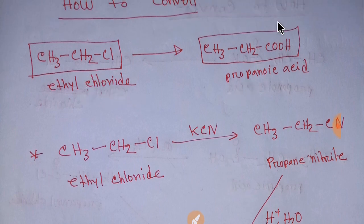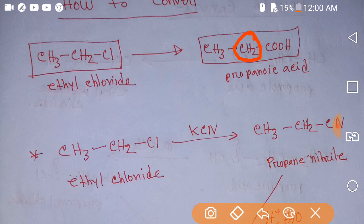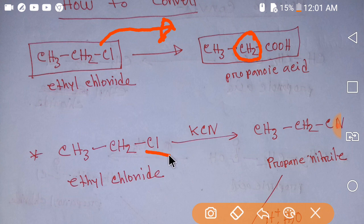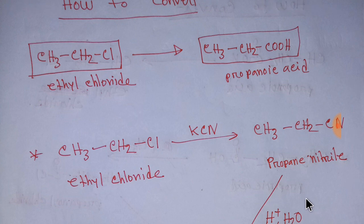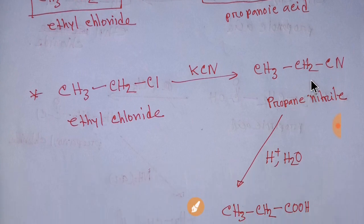If we want to convert ethyl chloride to propanoic acid, we have to increase one carbon. To increase one carbon, we need to plan — the mother compound for increasing the number of carbons in a chain is an alkyl halide. So here we have alkyl halide, and we just add potassium cyanide (KCN). The Cl will be replaced by CN, giving one more carbon in the chain. If you add potassium cyanide to ethyl chloride, you will get propanenitrile.